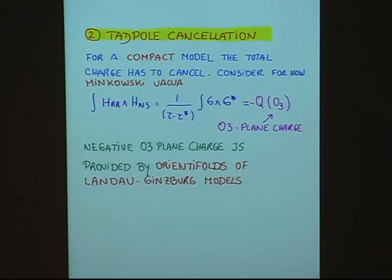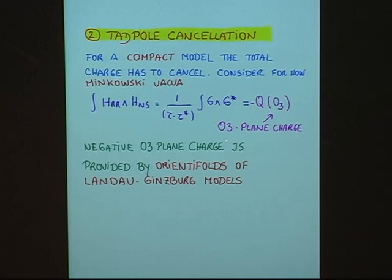My second constraint follows from tadpole cancellation. For our compact model, the total charge has to cancel. For the Minkowski vacua, the tadpole cancellation condition tells me that the wedge product of H_RR with H_NS has to equal an orientifold charge. The reason is that for Minkowski vacua the left-hand side is always positive definite — it is imaginary self-dual — so we need an orientifold charge in order to cancel the charge coming from H_RR and H_NS.